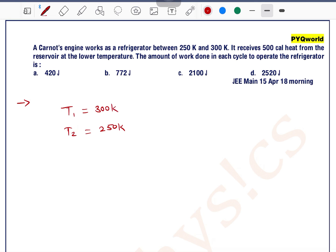It receives 500 calorie heat from the reservoir at lower temperature, means Q2 is equal to 500 calorie. The amount of work done in each cycle to operate the refrigerator is what we need to find. So let's see how to solve this.